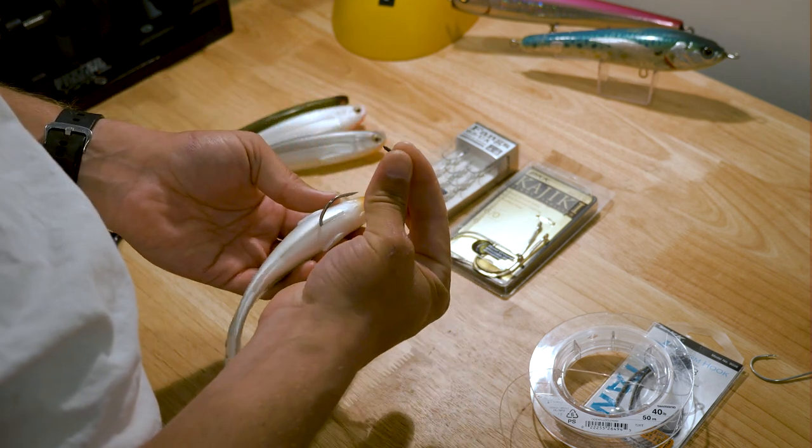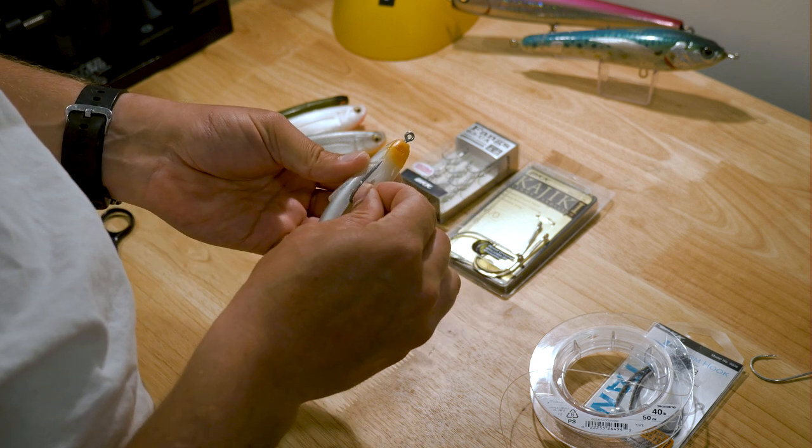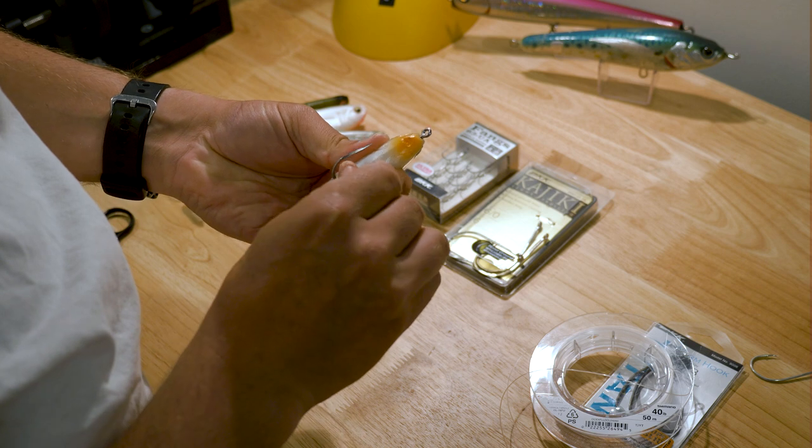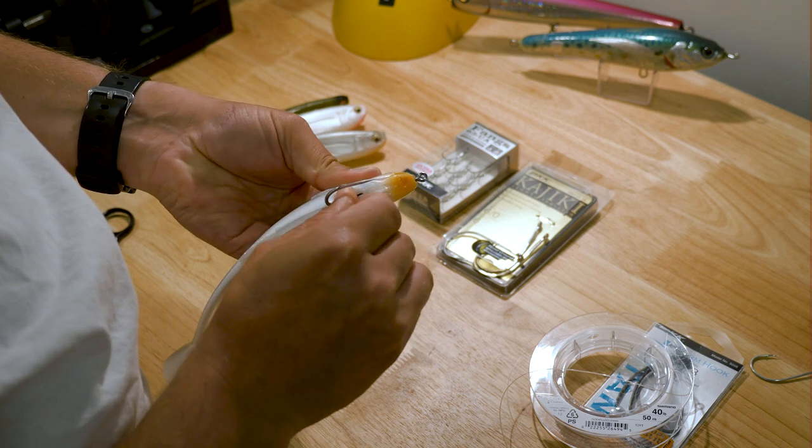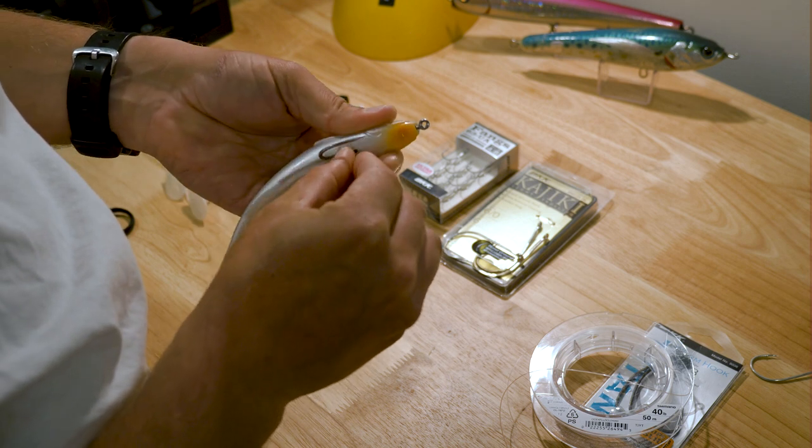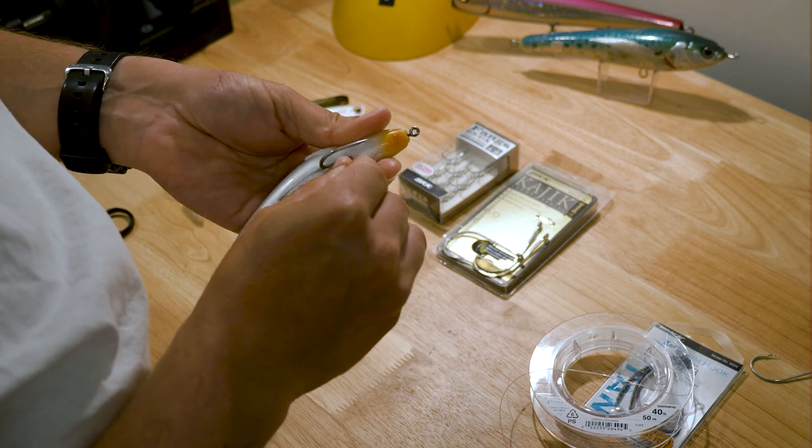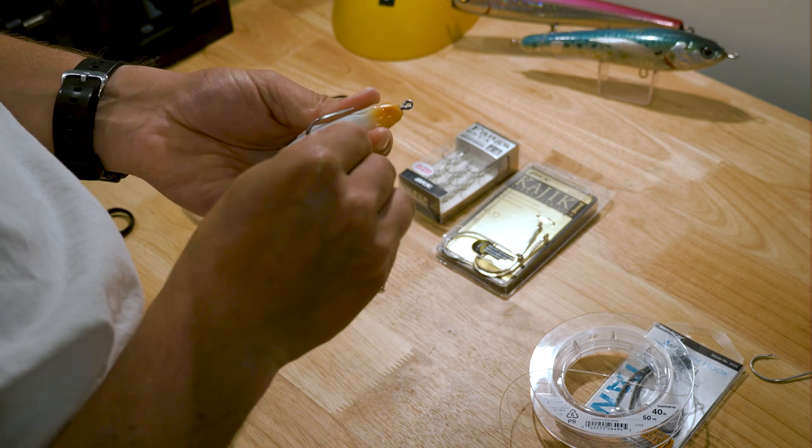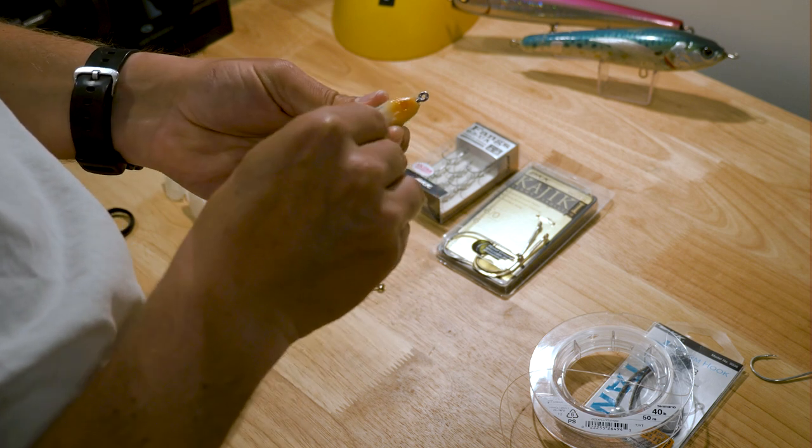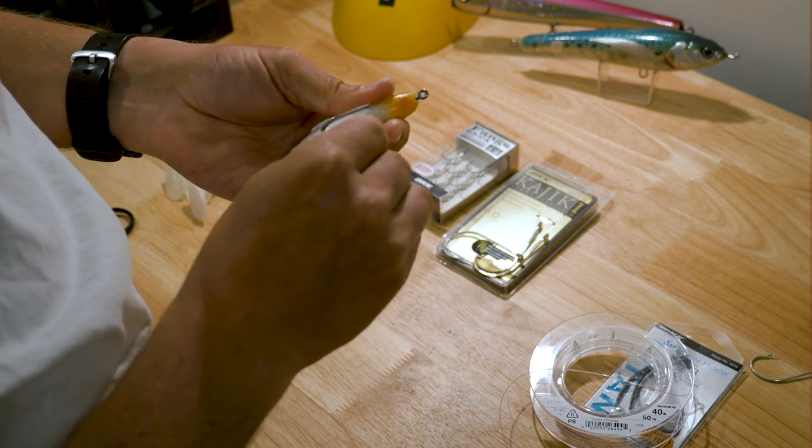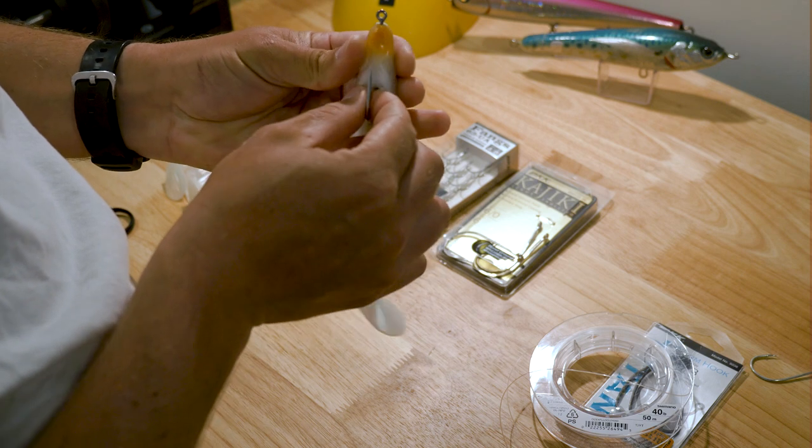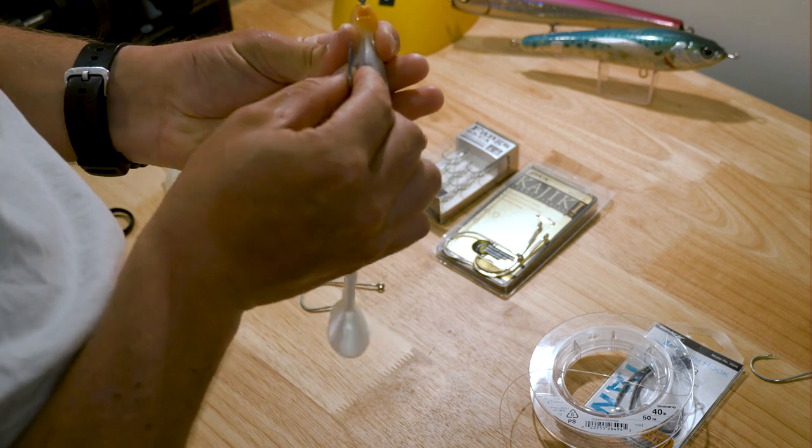Then with this little nail weight, the tungsten nail weight, I've found with these Sicario is just pushing it under the chin here. So just slide that one just under the surface of the soft plastic so that little nail weight acts like a keel so it just keeps that lure upright when you're slow rolling it and also when you're twitching it and that sort of thing.